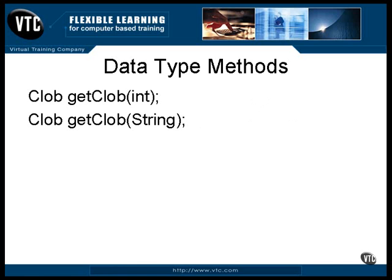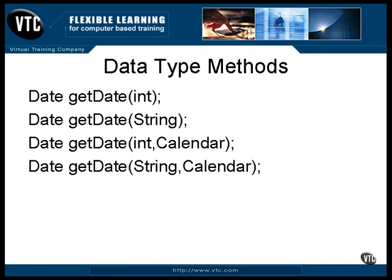A CLOB is an SQL type — this stands for character large object. The returned CLOB object contains a pointer to the actual data, not the data itself. It's a large, unformatted text document made up of ASCII characters and/or Unicode characters. A CLOB is a specialized form of a blob. These methods retrieve date and time information. If the calendar object is included, it's used to provide such things as millisecond data and time zone information, because some databases don't store that with their data types.